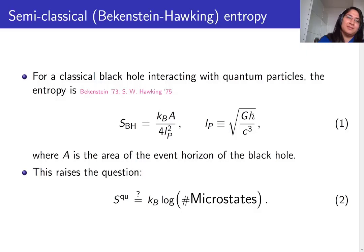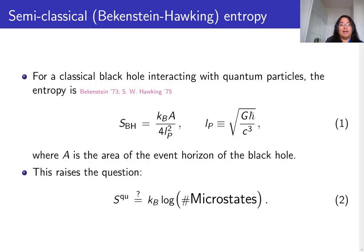This formula was obtained by looking at a quantum field interacting with a classical black hole. This raises a question: can we write down the entropy as the logarithm of the microstates of the black hole? It turns out for extremal black holes we can. The reason extremal black holes are special is that their horizons coincide, and as a result their Hawking temperature vanishes, which means they don't radiate and can be treated as isolated systems. Therefore, this question is well defined for extremal black holes.